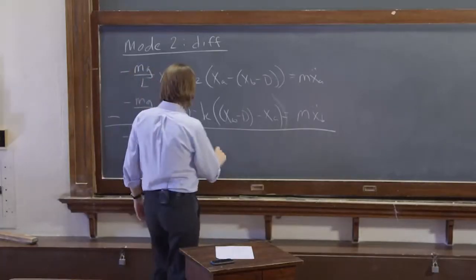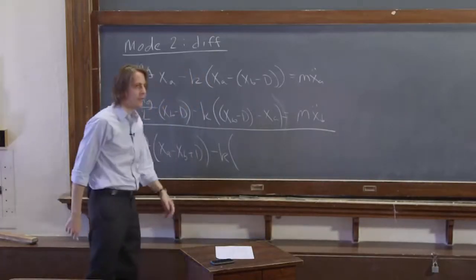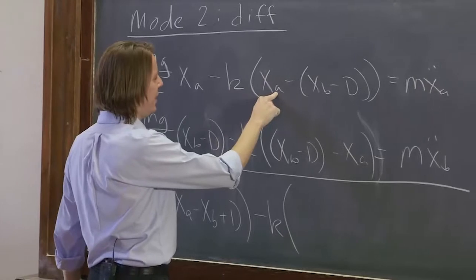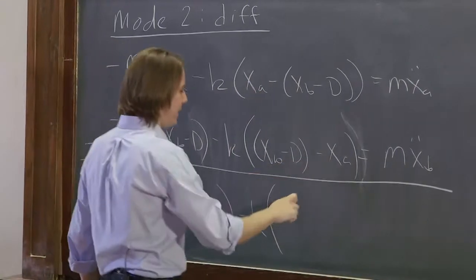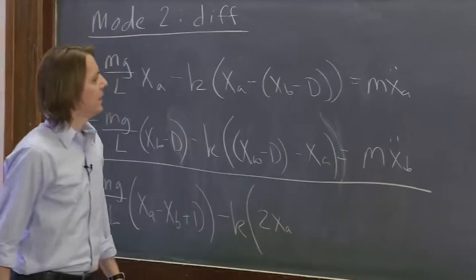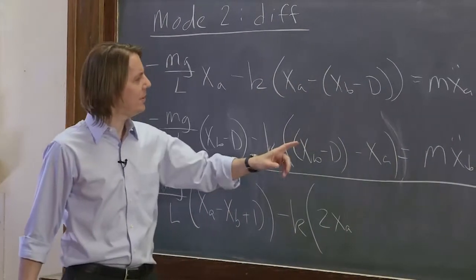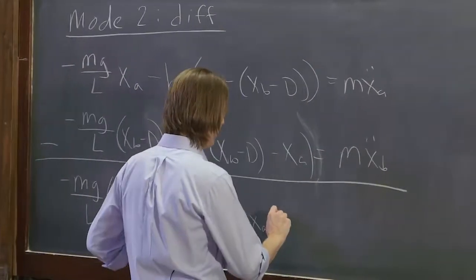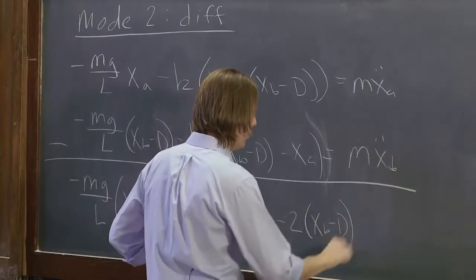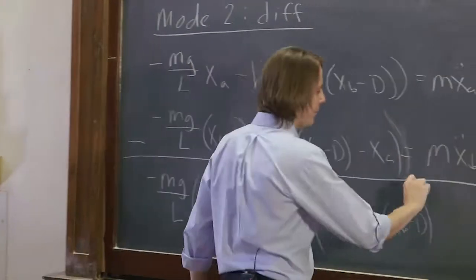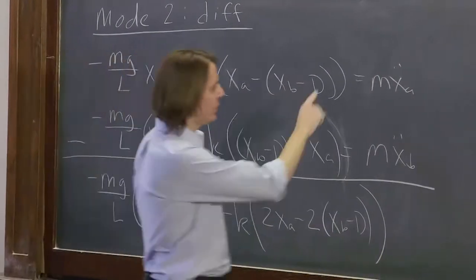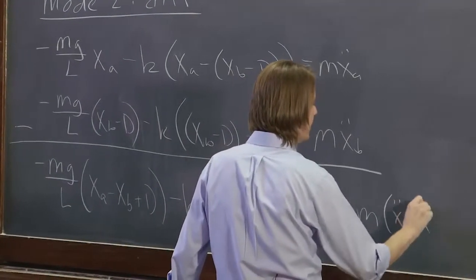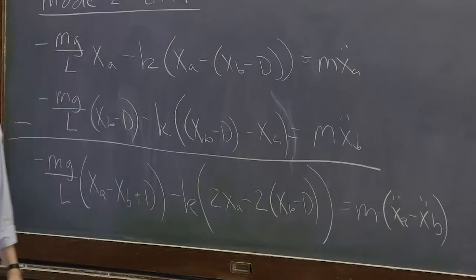And then minus k, and last time this term was nice because it went away. Well this time it's not going to go away. If we have xA minus minus xA, that's 2xA, it adds. And then if we have minus (xB minus D) minus (xB minus D), that's minus 2(xB minus D). And all that's times k. And that's equal to m times (xA double dot minus xB double dot). So there is the subtraction.